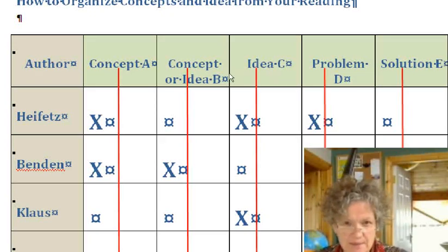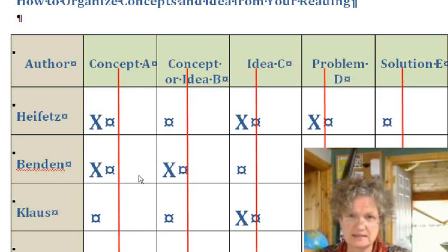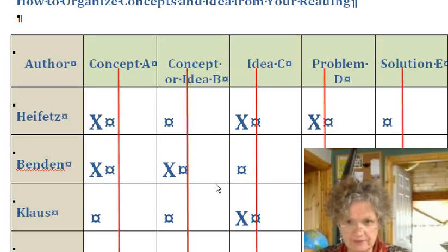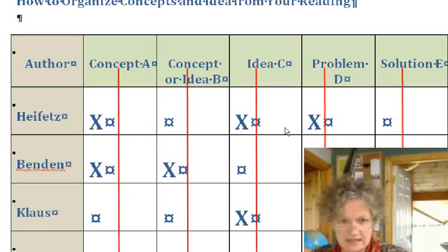Let's go into those concepts in depth, and then you write everything you know about concept A, and you cite Heifetz and Benden when appropriate. Same thing for B, same thing for the idea C, you discuss the problems that come up with the reading, how they might relate to your study, you cite and reference these authors.